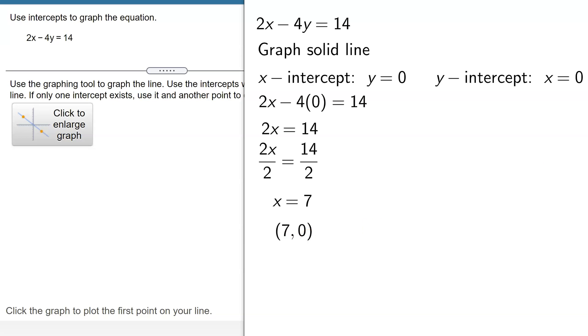Now I need to find the y-intercept by setting x equal to 0. That means I'm going to put a 0 up here. So I'm going to get 2 times 0 minus 4y equals 14. 2 times 0 is 0. So I just get negative 4y equals 14.